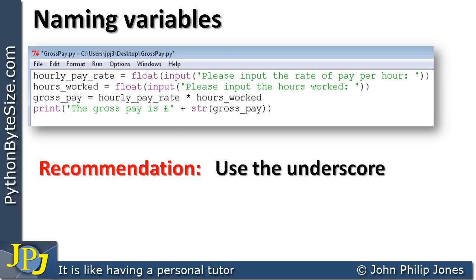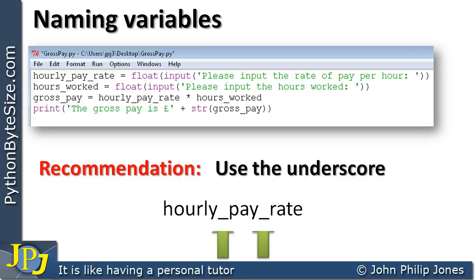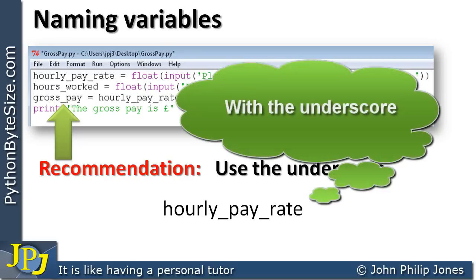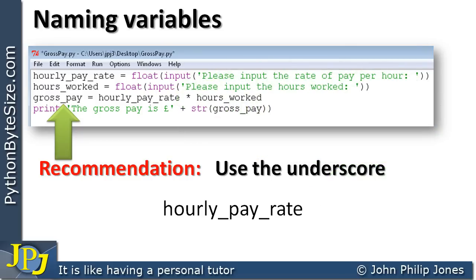The recommendation is to use the underscore, because that's what most people who write Python programs will do. Here we can see hourly_pay_rate with an underscore, and it is all lowercase. I've used hours_worked with an underscore between hours and work, and gross_pay with an underscore between gross and pay. The underscore is the usual approach for Python programmers.